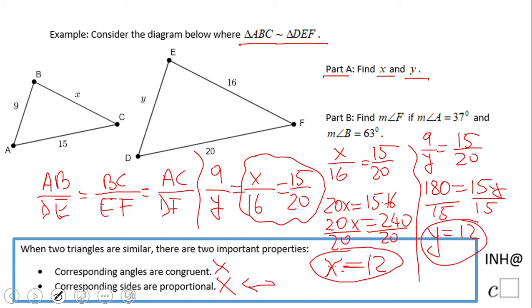Because they are in different triangles, this is 12 and this is also 12. In Part B, we need to find the measure of angle F. Look into this - we notice angle A is 37 degrees, so angle D will be 37 degrees. Angle B is 63 degrees, so angle E will be 63 degrees.